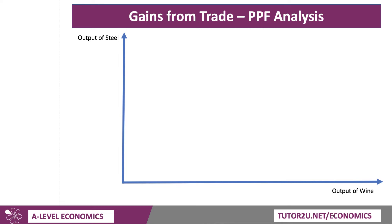We're going to look at two countries — Brazil and Mexico — initially producing steel and wine, and then trading. Output of steel is on the y-axis, output of wine on the x-axis. Don't worry in the exam about getting all the precise gradients correct — the examiners are not going to check. Here's Mexico's PPF: they can produce either 100 units of steel or 200 units of wine.